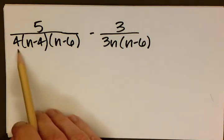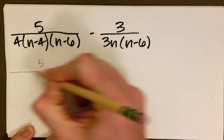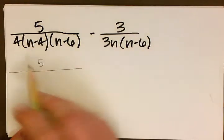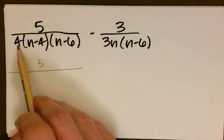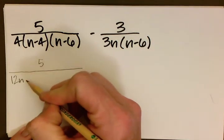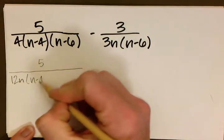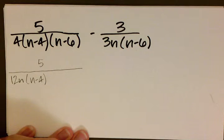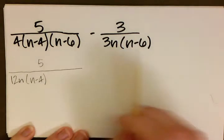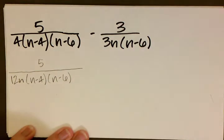So we can take, of course our 5 that's in our numerator continues to stay. We want to take our 4 and our 3n and multiply those two guys together. We have an n minus 4, so that stays. And then we have a common term of n minus 6, so that stays as well.